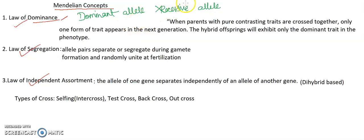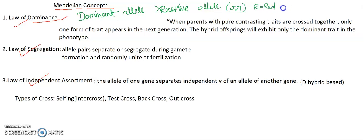Aur agar recessive dominant ke saath aaye to woh apna expression nahi dhe paati. Aur recessive recessive ke saath aaye, to apna expression dhe deti. For example, small r, small r — humne suppose kiya r red ke liye liya aur small r humne white ke liye liya. To humare paas small r, small r ka jo genotype hai — maine apne last video mein aapko genotype aur phenotype bataya tha.